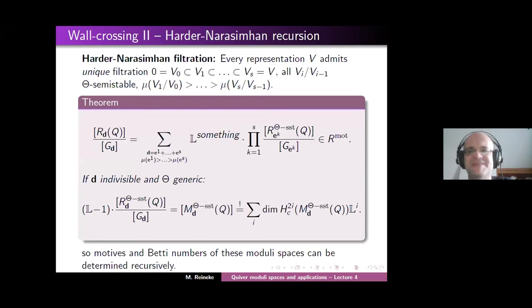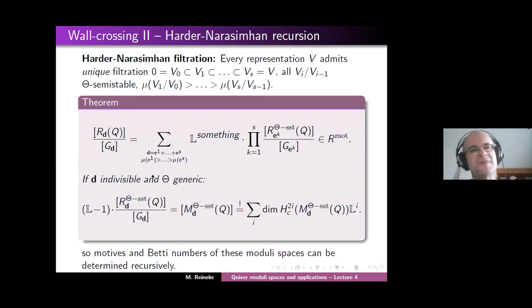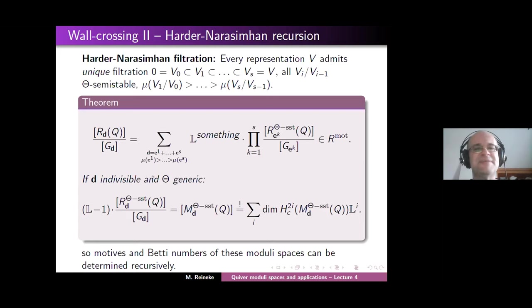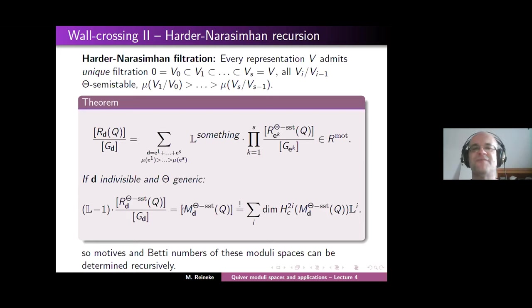A follow-up question: on the second line, D is indivisible and theta is generic — is this enough to ensure that there exists a semi-stable representation so that the moduli space is what it's supposed to be? What this condition means is that any semi-stable is automatically stable. We don't know if there is a semi-stable — if there isn't, the moduli space is empty and its motive is zero. But as soon as there is a semi-stable, it's automatically stable, and that means the quotient map is a geometric quotient. So the quotient stack is isomorphic to the quotient space, apart from a factor — that's why you have this equality.